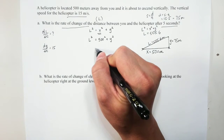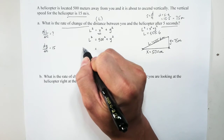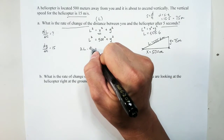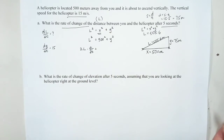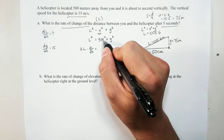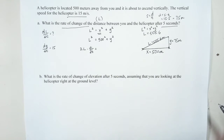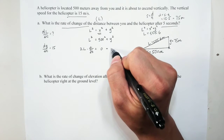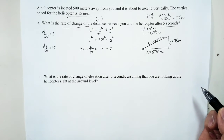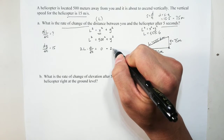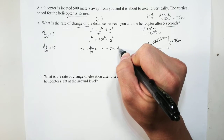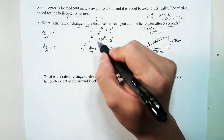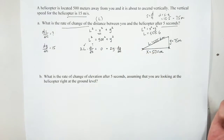Now we differentiate implicitly. The derivative of l² gives 2l · dl/dt using the chain rule. The term 500² is a constant so it differentiates to zero. The derivative of y² gives 2y · dy/dt. We have l, we are solving for dl/dt, and we have dy/dt.